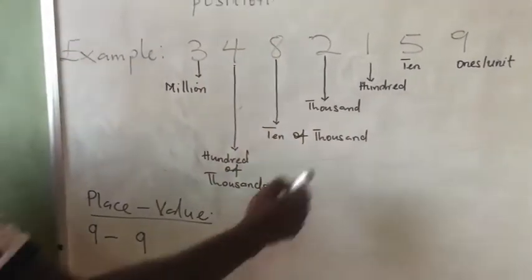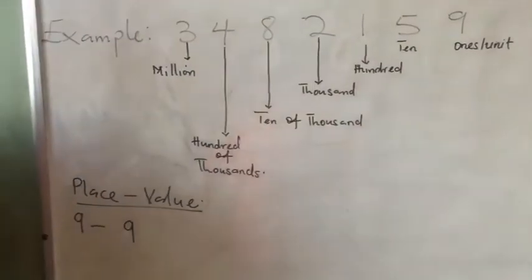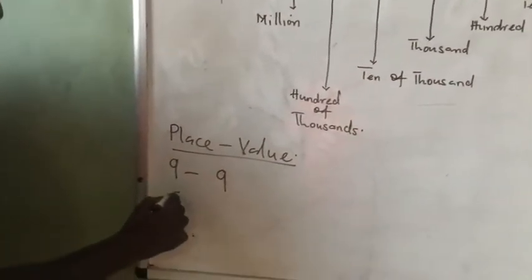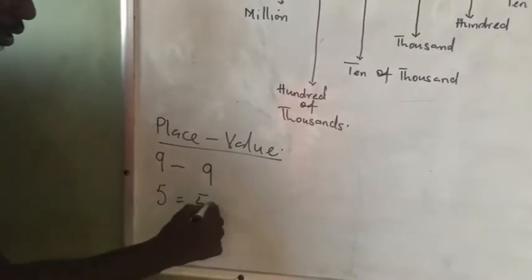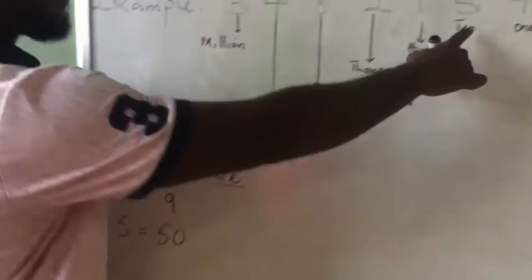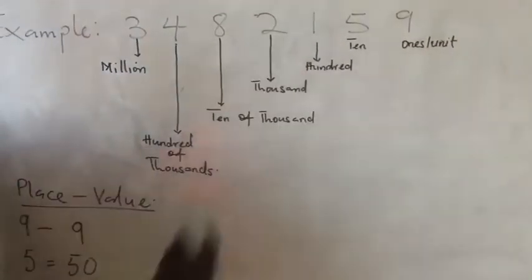If you want to write a place value for the tens number, the 5, its place value is going to be what? 50. Why 50? You write a 5 and the digit behind it, you just change it to 0.